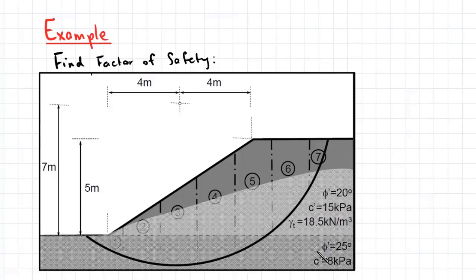So the bottom soil layer has an angle of friction of 25 degrees and a cohesion of 8 kPa, whereas the soil layer at the top has an angle of friction of 20 degrees and a cohesion of 15 kPa. However, the total unit weight has been assumed to be the same for both soil layers. And we're essentially interested in finding the factor of safety for this soil element here.